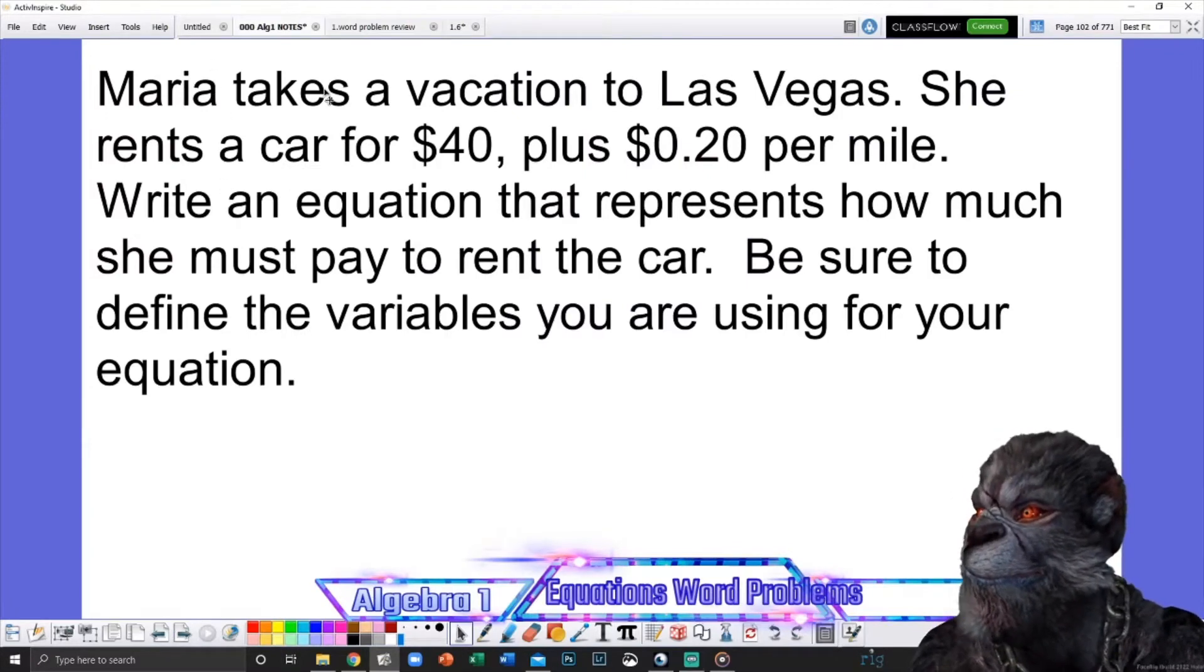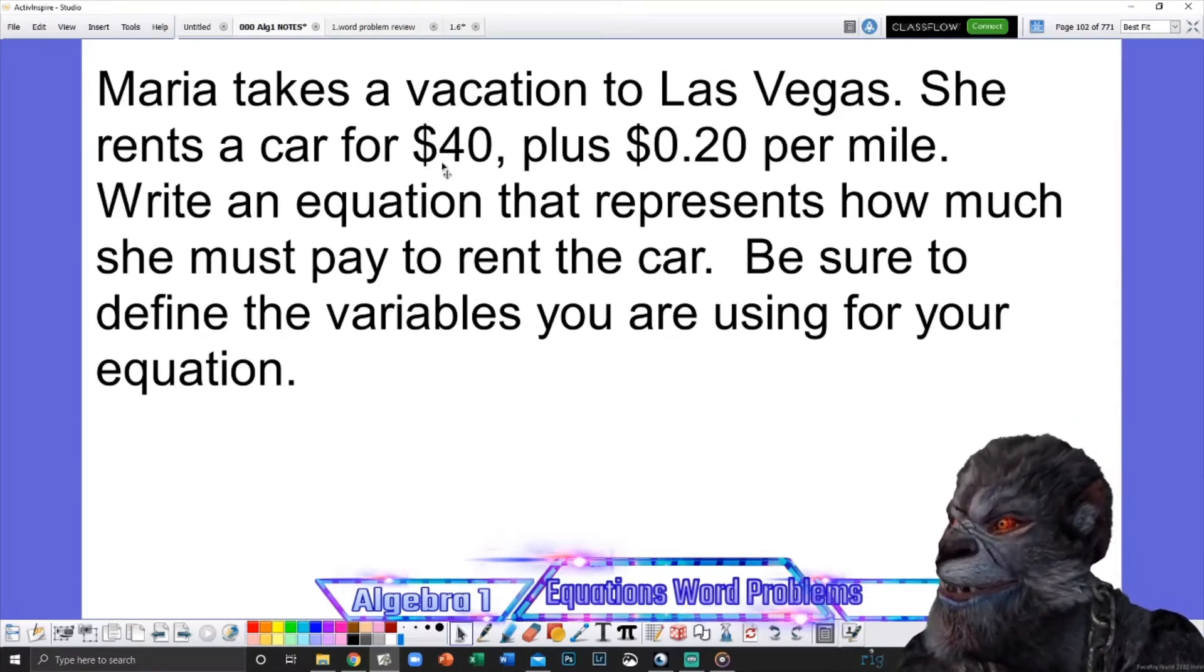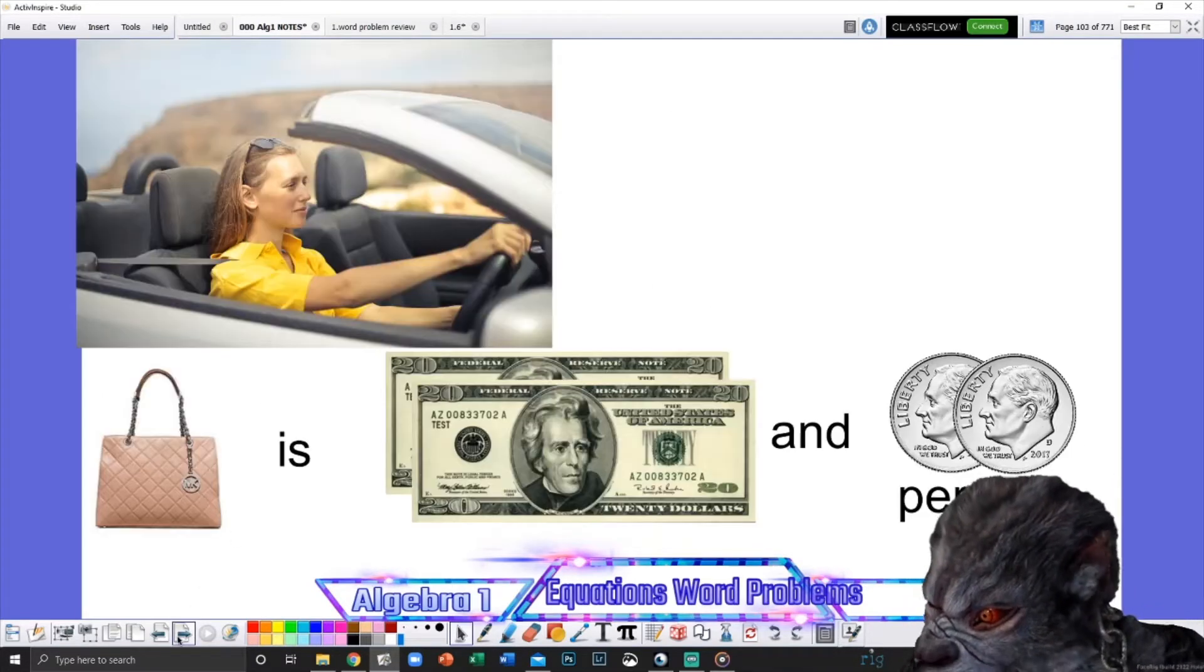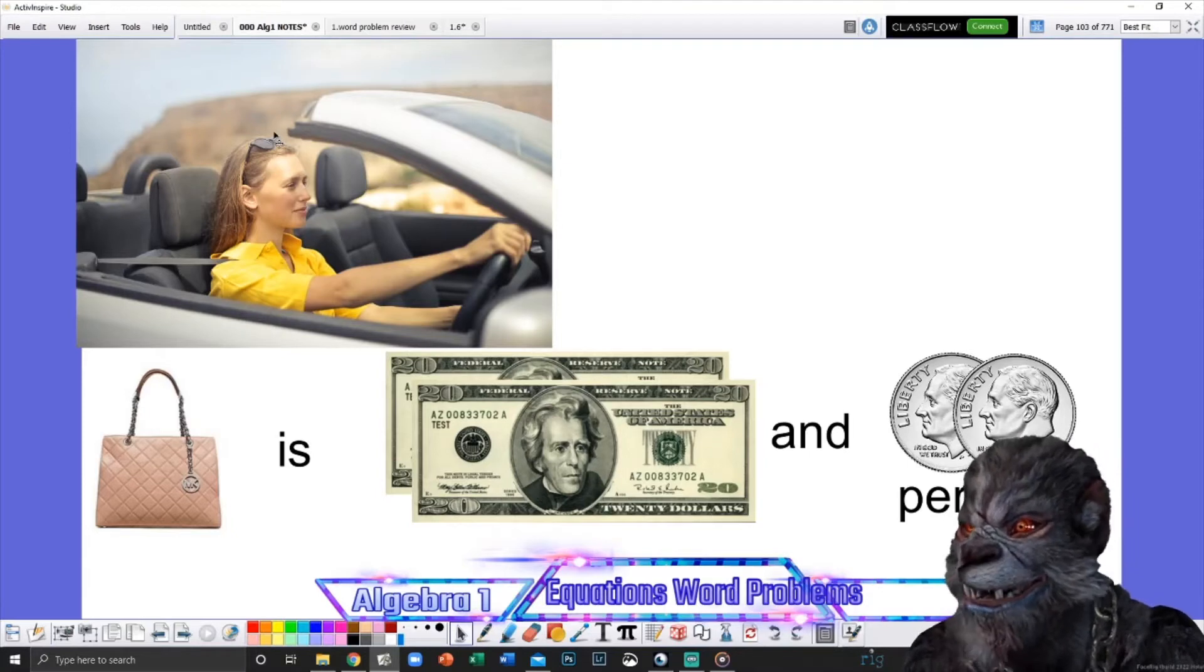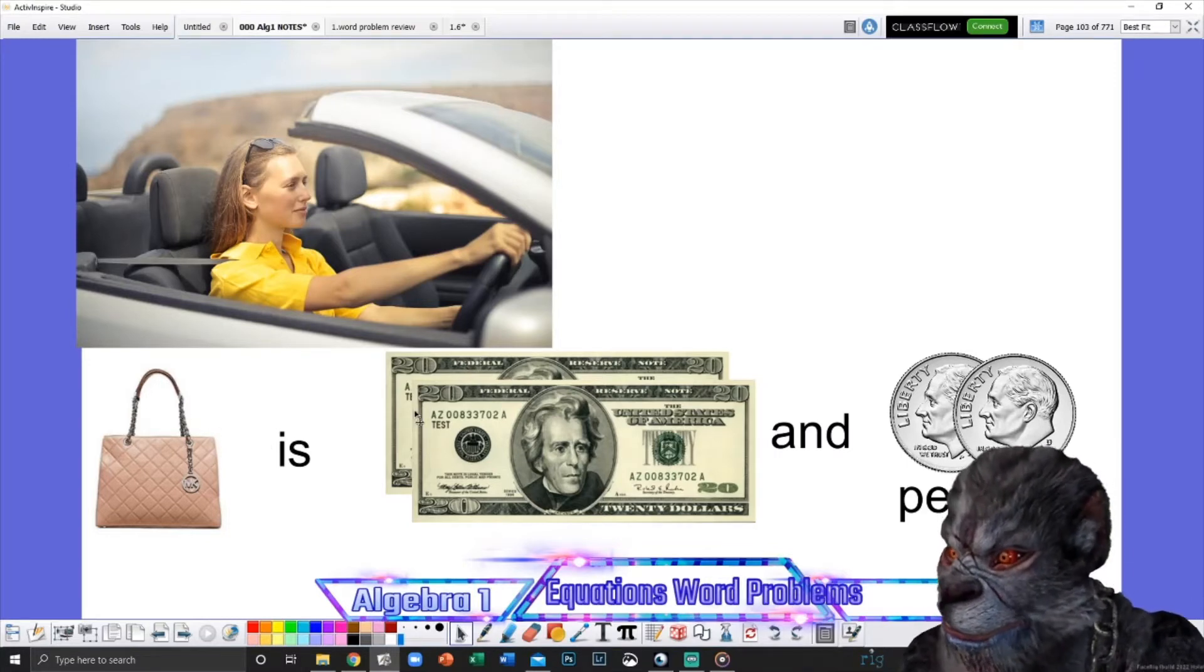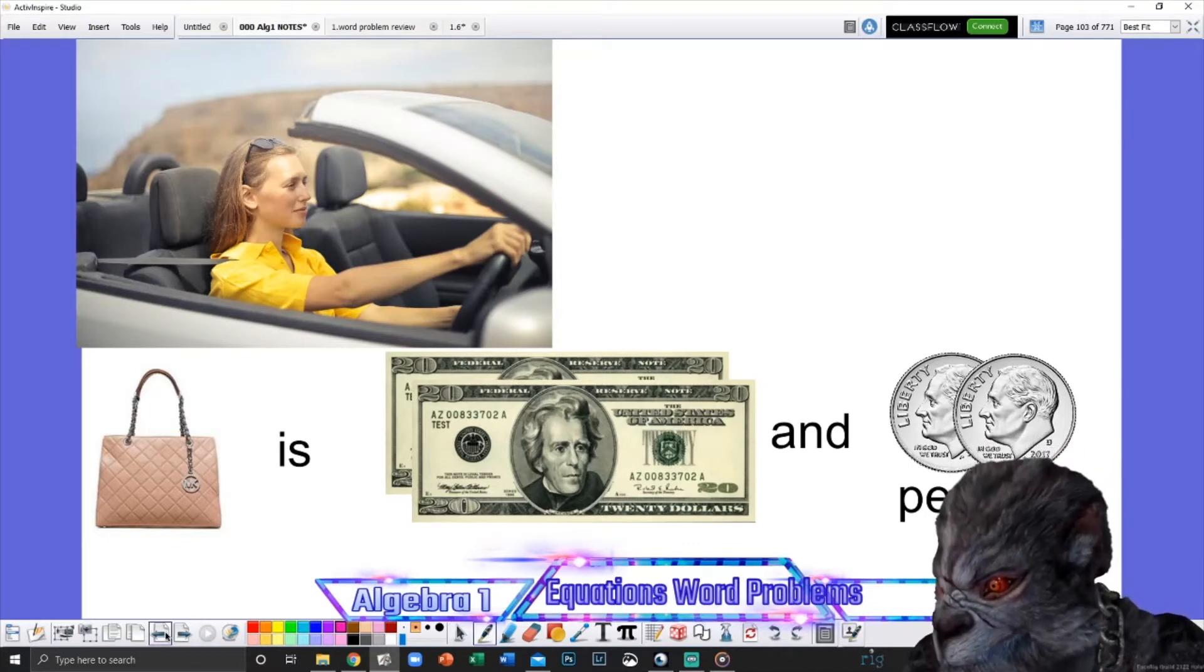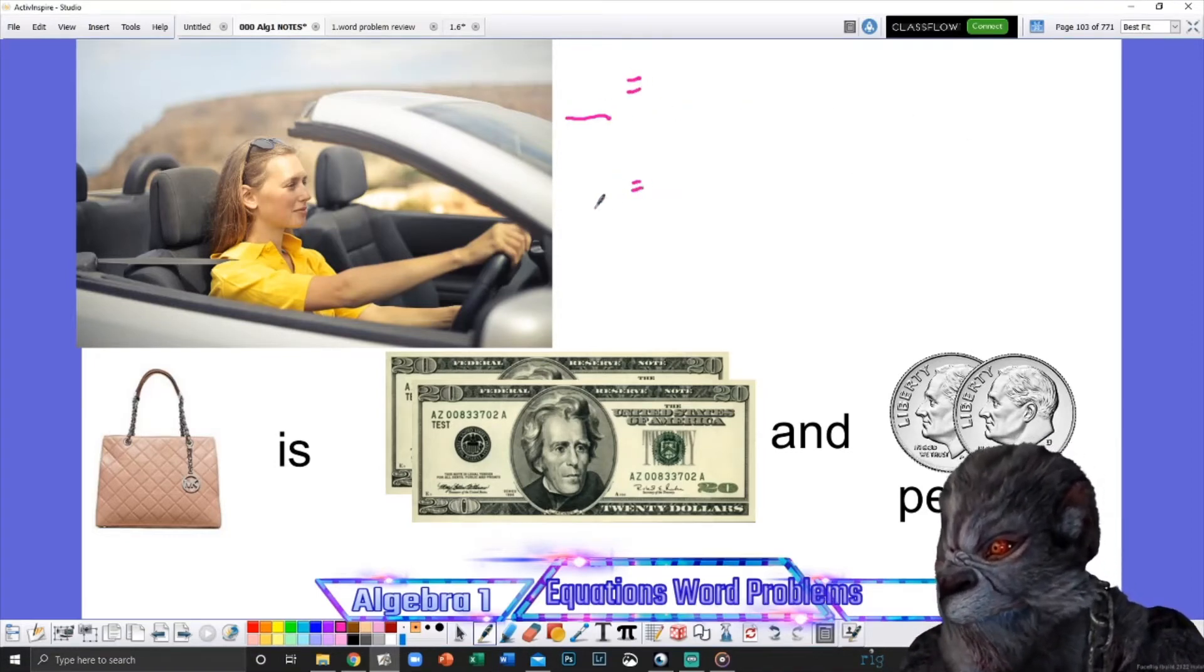All right, first we have Maria. Maria takes a vacation to Las Vegas. Oh, if only we could take a vacation right now. She rents a car for $40 plus 20 cents per mile. Write an equation that represents how much she must pay to rent the car, and be sure to define the variables for your equation. So I'm going to help you out here. Here's Maria, and normally I would just take one of your pictures and put your face there, but sorry, you're going to have to be stuck with this Maria.